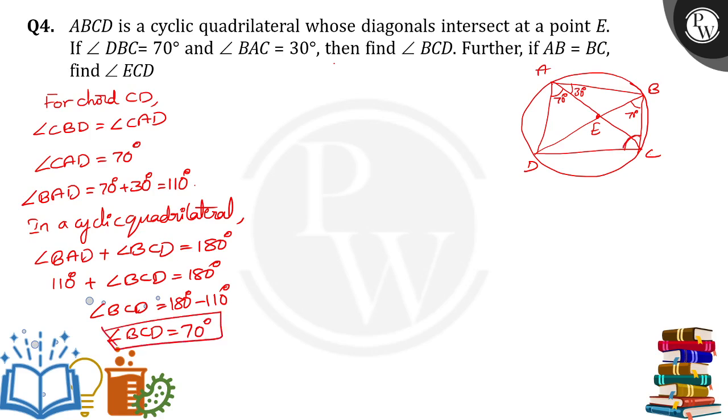This angle is equal to 70 degrees. Now, if AB is equal to BC. If these two angles are equal, AB is equal to BC. Now, I am going to take triangle ABC. In triangle ABC, AB is equal to BC, then their opposite angles are equal.